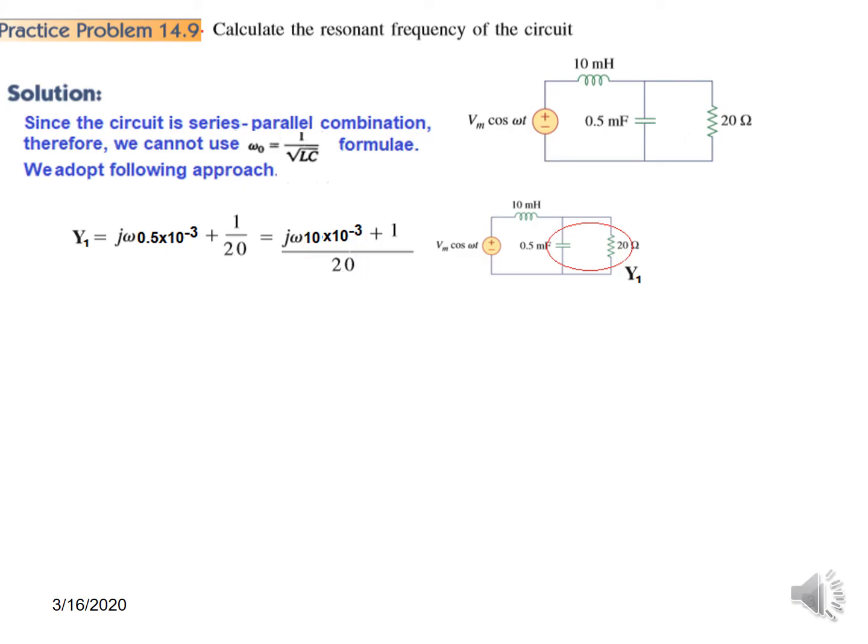Y₁ is this term: jω × 0.5 and 1 over 20. Solving, we come to this. Against the admittance, now we find the impedance Z₁, which is 1 over Y₁, so we invert this.